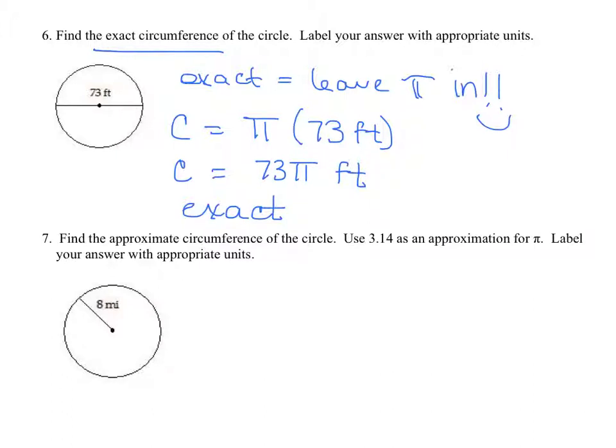Now in number seven, we're going to find the approximate circumference. So that means you're going to put the number in for pi that I tell you to use. So here we go. Well for this, we have the radius is 8 miles. That means the diameter, if I think about it, I'm going another 8 miles. So the diameter is 16 miles. Therefore, the circumference, which the formula is pi times the diameter, will be pi times 16 miles.